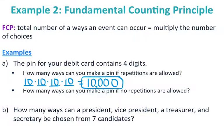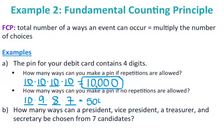What if repetitions are not allowed? I still have 4 spots. My first number has 10 choices. Since I can't repeat, the second number has 9 choices, then 8, then 7. The fundamental counting principle says multiply: 10 times 9 times 8 times 7 equals 5,040. So once we remove repetitions, the number of ways to make a PIN decreases significantly.